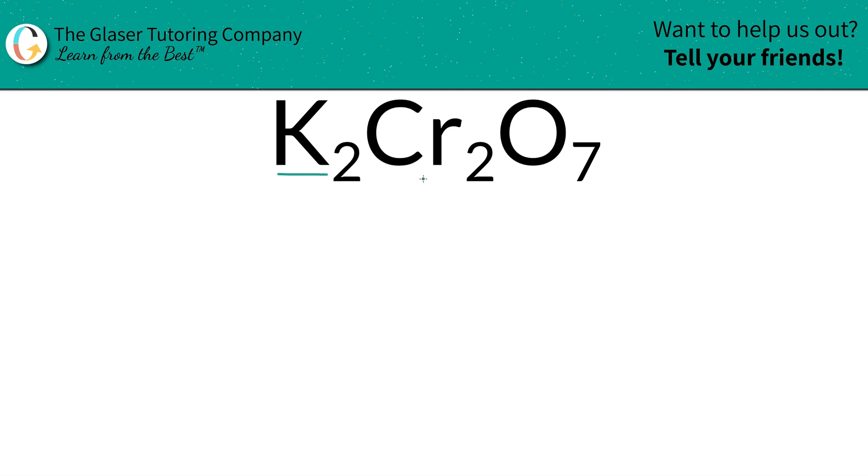How do we find the mass percents of potassium, chromium, and oxygen inside of potassium dichromate? First we need to find the total mass of the compound, and then we can find those percents.